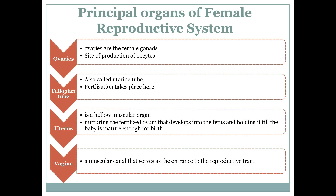We are discussing the female reproductive system. When we say 'system,' you already know that a group of organs makes a system. So the female reproductive system will also have organs performing specific functions. Let's have a look at the principal organs, starting from the ovaries.